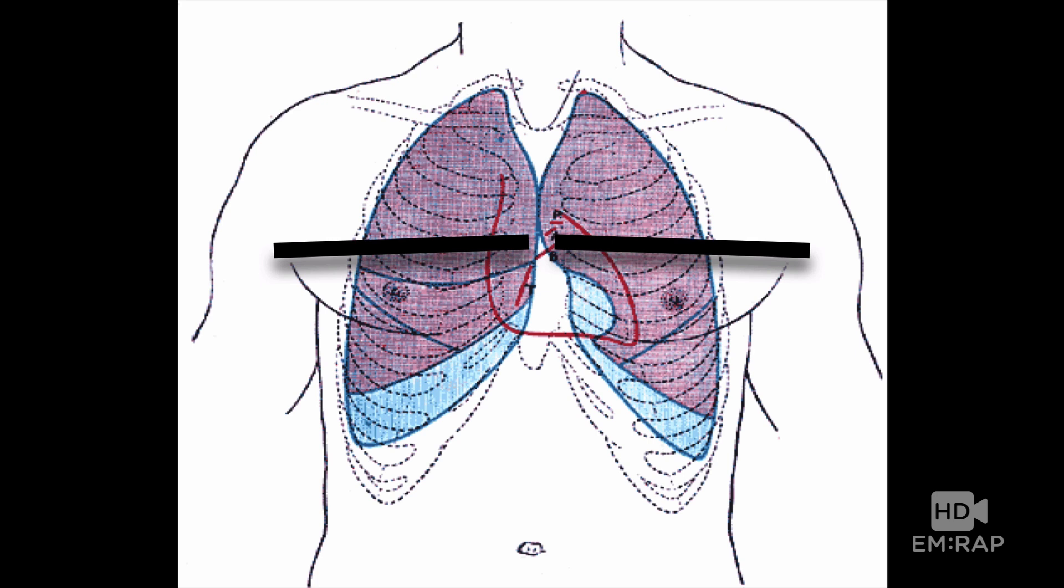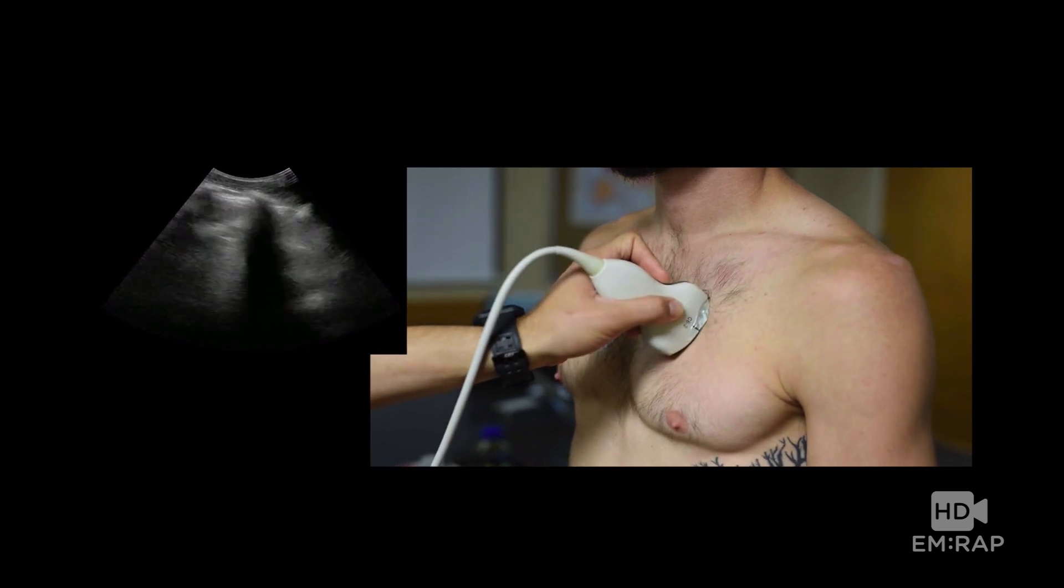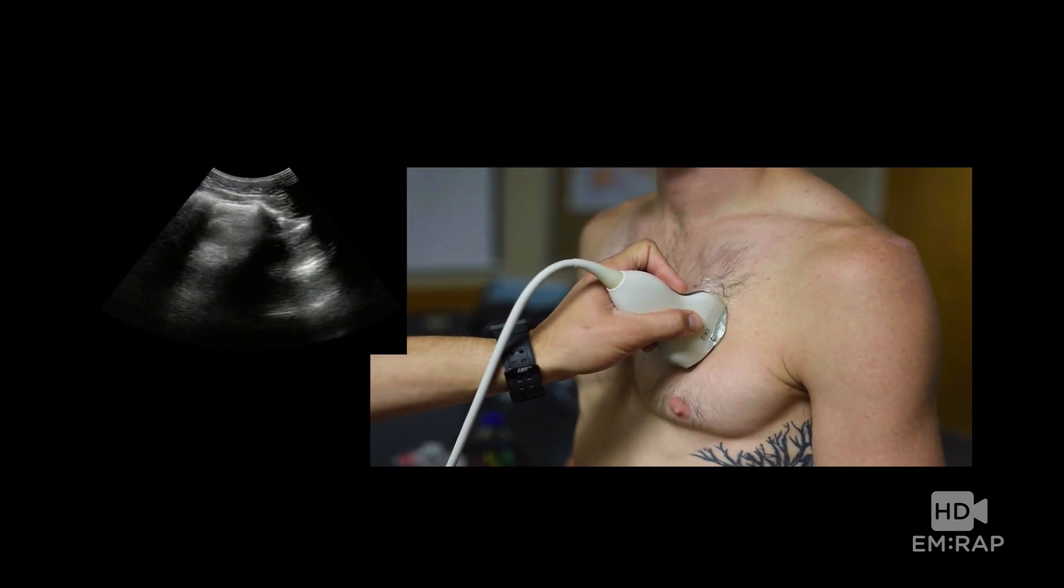If you see B lines in two zones per hemithorax, then you have pulmonary edema. Now a single B line essentially has no real clinical significance. Two B lines still essentially have no real clinical significance. It isn't until you have three or more B lines in a zone is that considered to be pathologic. Personally, I start looking in the anterior lung fields bilaterally because that area is the most specific for pulmonary edema.